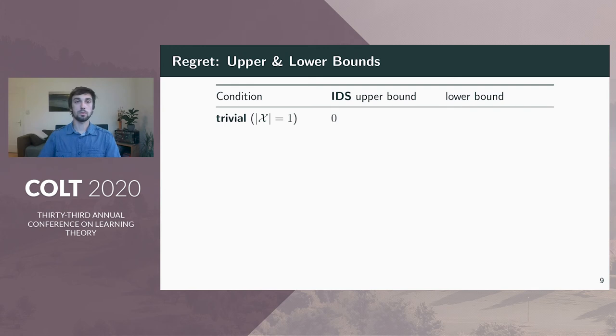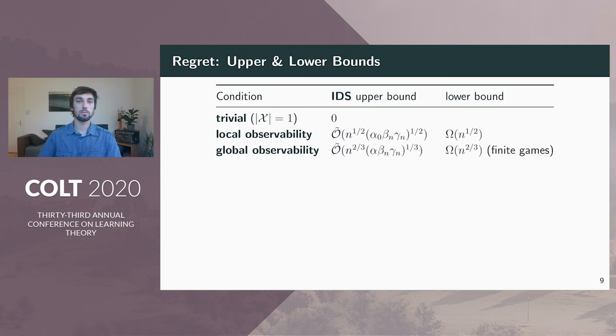Here's an overview of the results from the paper. First, there's a trivial case where there's only one action in the action set. Obviously, in this case, any learner has zero regret. Second, with the local observability assumption, IDS achieves an n to the one-half rate. And we showed that this cannot be improved except for trivial games. Third, on globally observable games, IDS has at most n to the two-thirds regret. We showed that for finite action sets without the local observability condition, this is essentially not improvable. Lastly, there's a case where the learner cannot estimate reward differences, and then the regret is just linear.